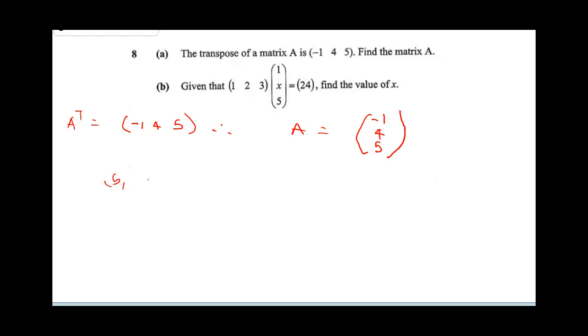This is given that 1, 2, 3 into 1, x, 5 is equal to 24. Find the value of x. We're going to multiply this matrix. 1 times 1 plus 2 times x plus 3 times 5, which is equal to 24. This is going to be 1 plus 2x plus 15 is 24. This is going to be 2x plus 16 is equal to 24.